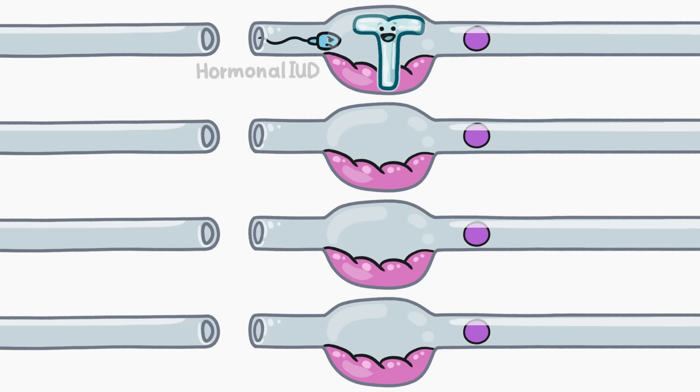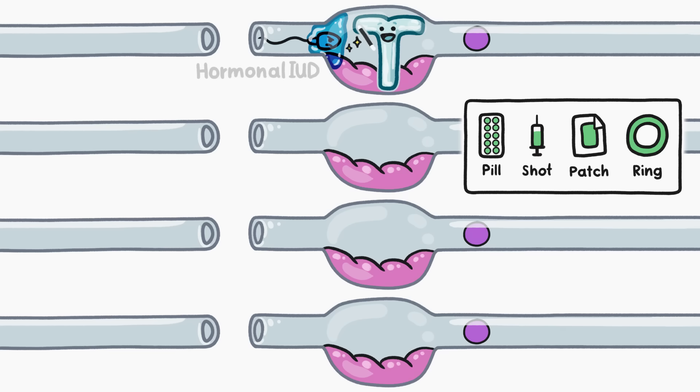Lots of hormonal IUDs also work by basically blocking the sperm's path. They make the liquid the sperm swim through so thick that the tiny tadpoles can't reach the egg. And remember those hormone-based types of birth control that stop production at the egg factory? The hormones in those also work here to thicken that liquid.